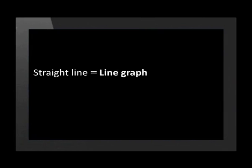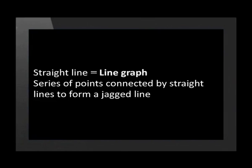Those were two very clear examples of the graphs. When the graph is a straight line, we call it a line graph. When the graph is a series of points joined by straight lines to form a jagged line, we call it a broken line graph. Another example of a line graph is when we show conversions between different currencies. An example of a broken line graph is the changes in the price of an item over a period of time.